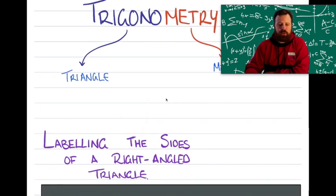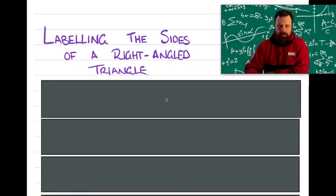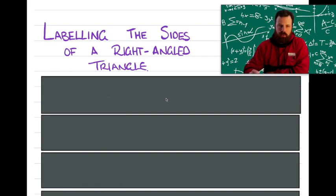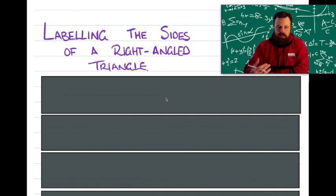But before we can do trigonometry, we need to be able to label the sides of our triangle. And in my opinion, this is the most important part of trigonometry. If you can correctly label the sides of your triangle, you have done most of the hard work with trigonometry to start off with. We really need to take our time to identify all the information that we've been given. For me, there are four key steps when it comes to labeling the sides of our triangle.